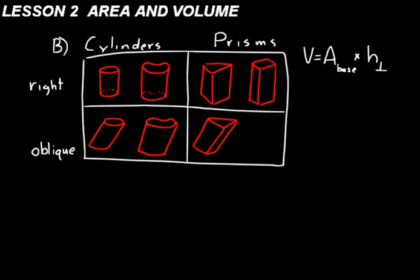The volume is equal to the area of the base times the height perpendicular to the base. Similar thinking applies to a triangle — the area equals base times the height perpendicular to the base. So on a right cylinder or prism, the side is the same as the height perpendicular to the base. On an oblique cylinder or prism, we need to know the perpendicular distance to the base to calculate volume.